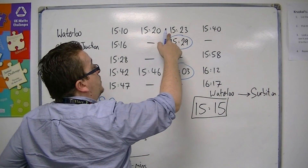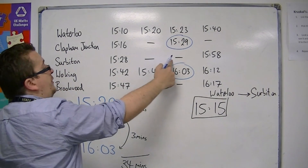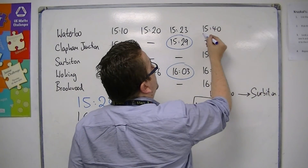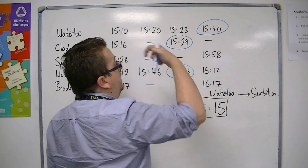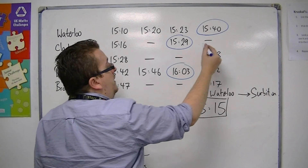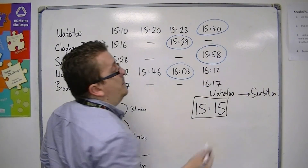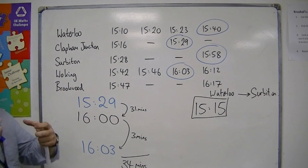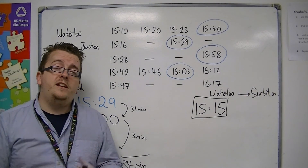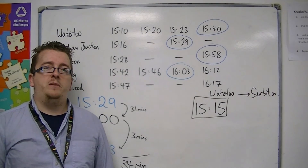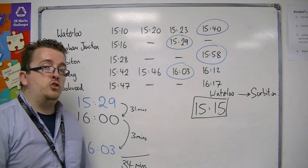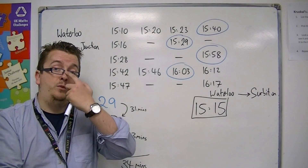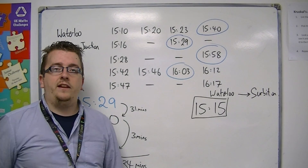Neither does the 3:23 — that doesn't go to Surbiton either. In fact, they would have to wait until 3:40 in order to get to Surbiton, and they would arrive 18 minutes later at 3:58. So little questions like these are likely to come up if you face a timetable question. But the actual technique of being able to read from a bus or train timetable is a very important day-to-day skill.